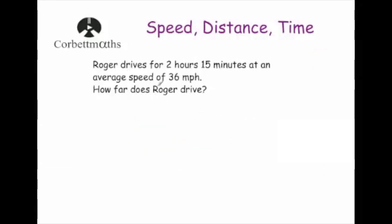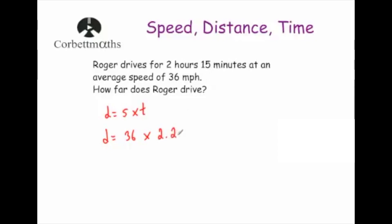Roger drives for 2 hours 15 minutes at an average speed of 36 miles per hour. How far does Roger drive? We want distance, so distance equals speed times time. The time must be in hours: 15 minutes is a quarter of an hour, so 2 hours 15 minutes equals 2.25 hours. Distance equals 36 times 2.25, which equals 81 miles.